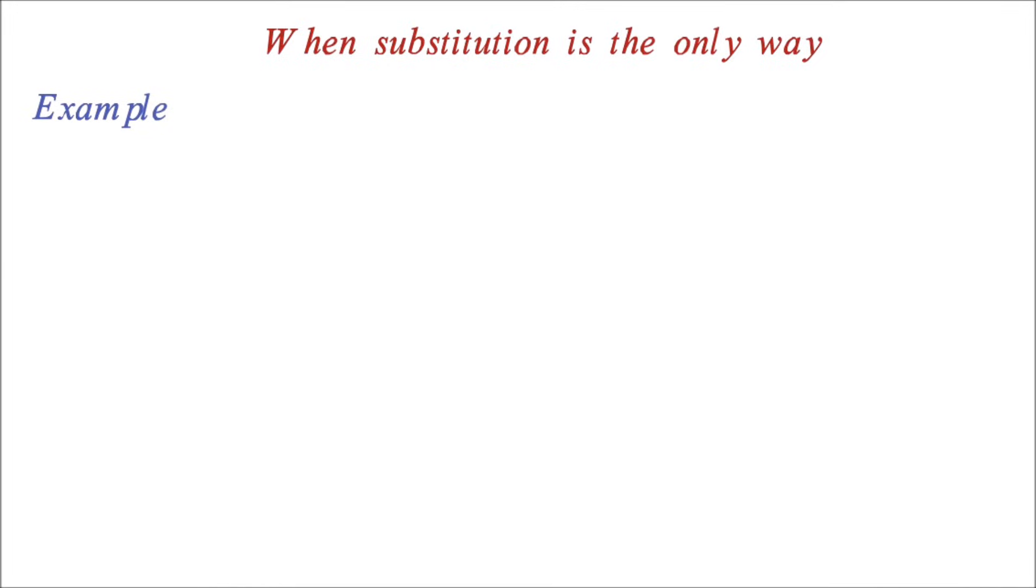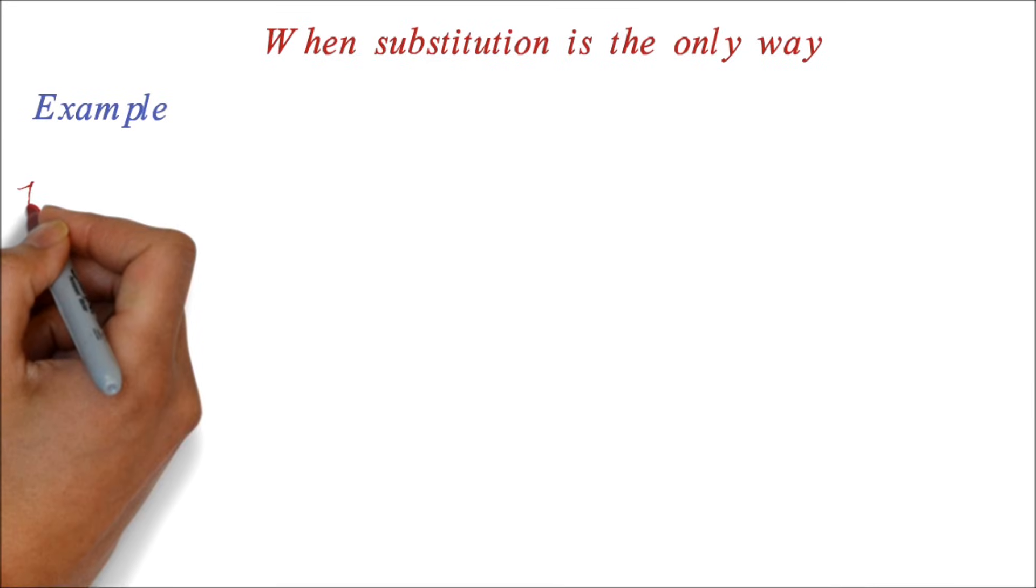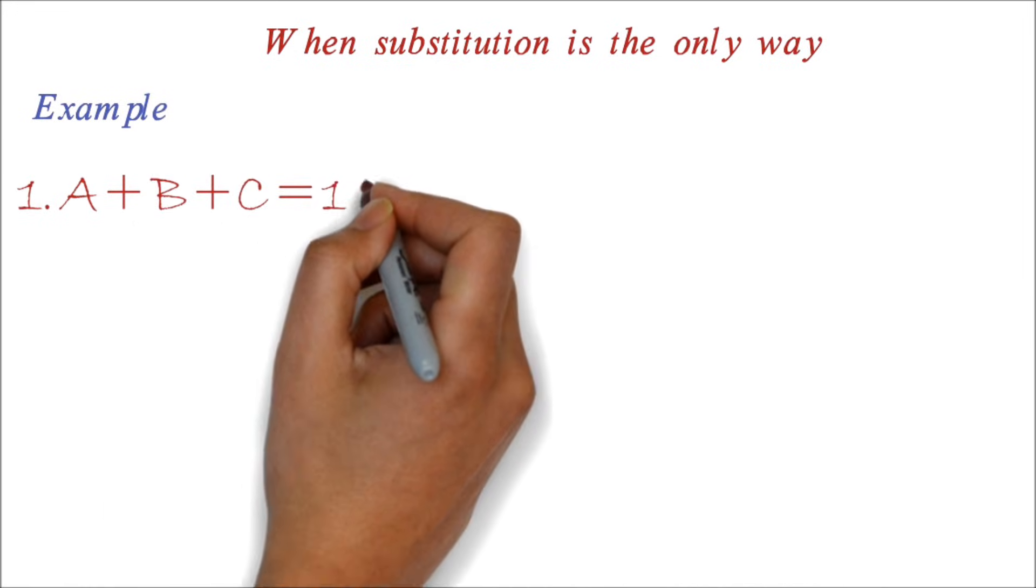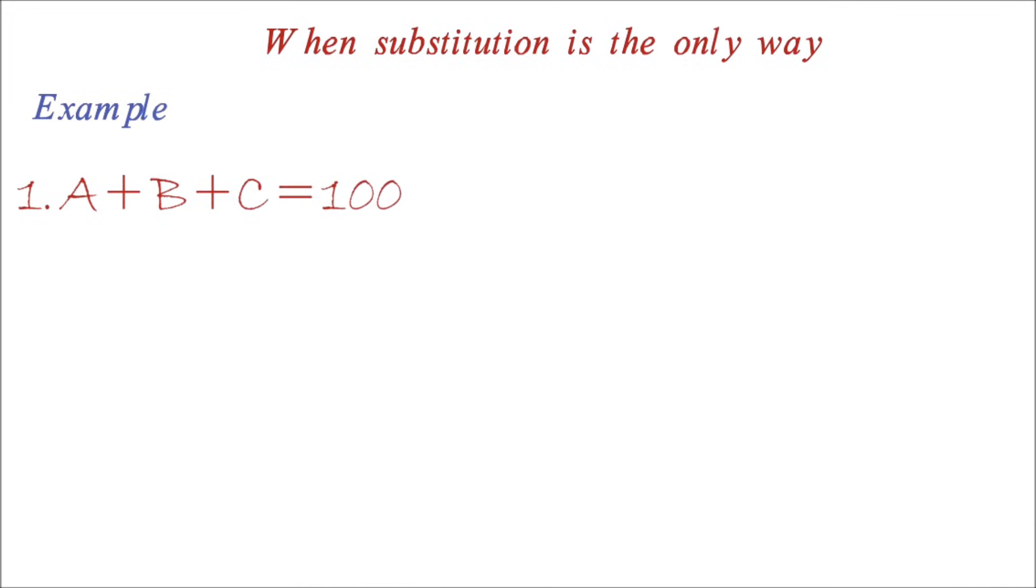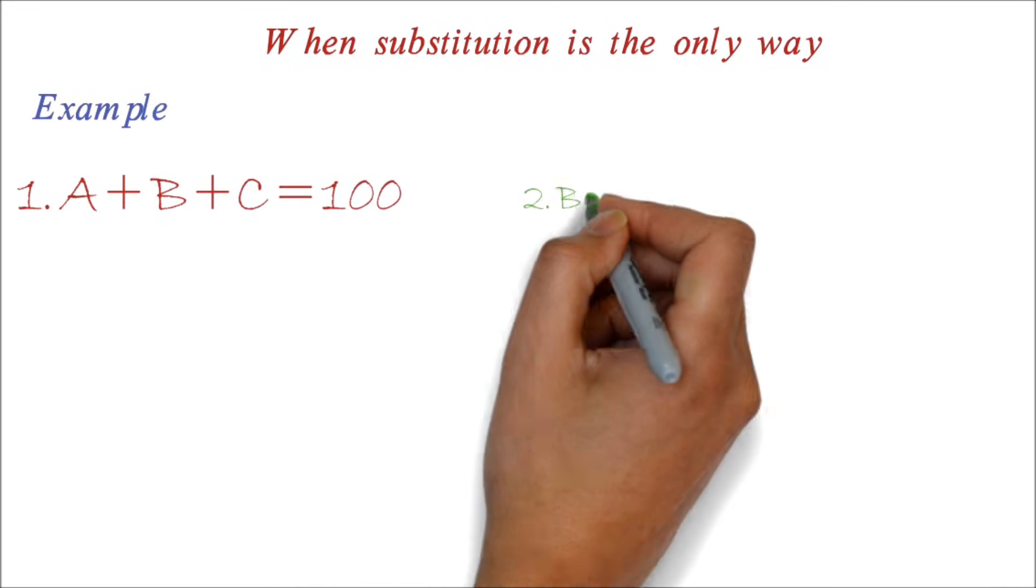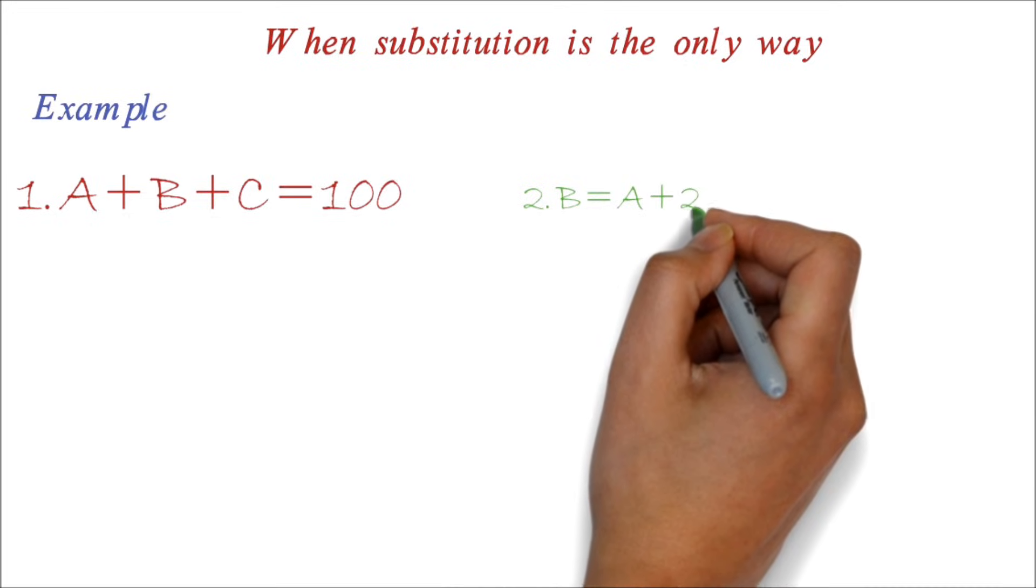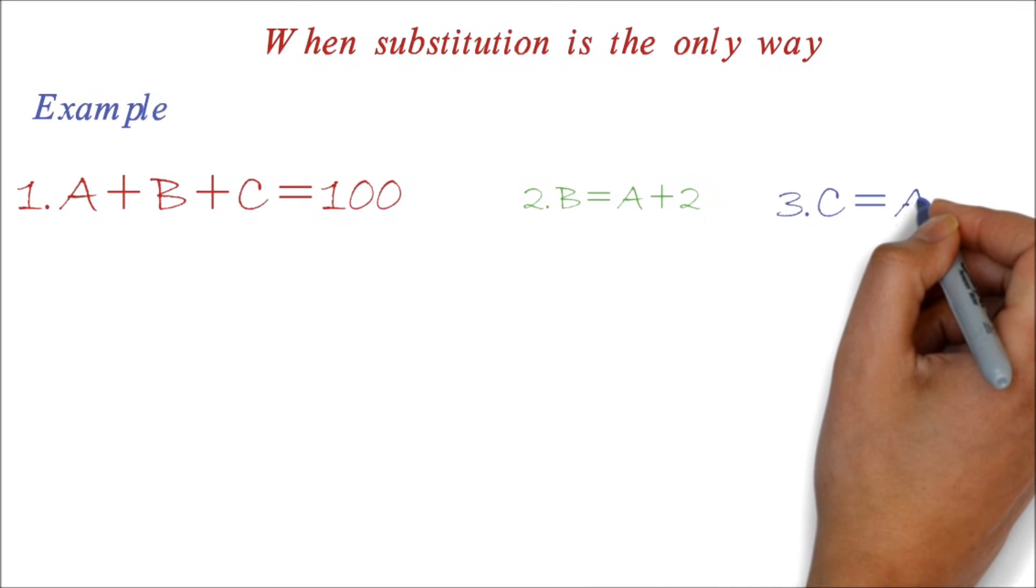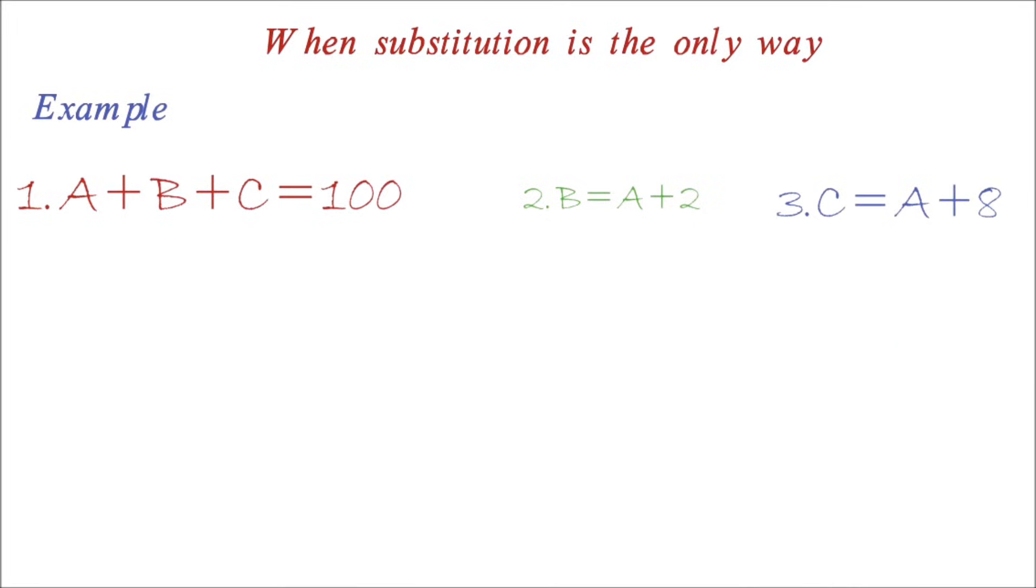Example. Assuming we have these three equations after reading a word problem. One, A plus B plus C equals 100. Two, B equals A plus 2. Three, C equals A plus 8. You will notice that we cannot solve this easily because we don't have any value for a letter we can use.